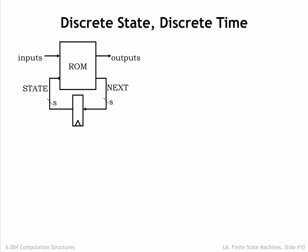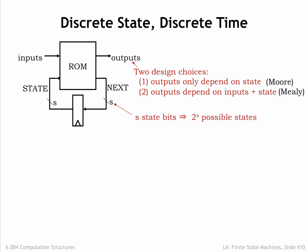Recapping our design choices. The output bits can be strictly a function of the current state, the FSM would then be called a Moore machine, or they can be a function of both the current state and current inputs, in which case the FSM is called a Mealy machine. We can choose the number of state bits. S state bits will give us the ability to encode 2 to the S possible states. Note that each extra state bit doubles the number of locations in the ROM. So when using ROMs to implement the necessary logic, we're very interested in minimizing the number of state bits.